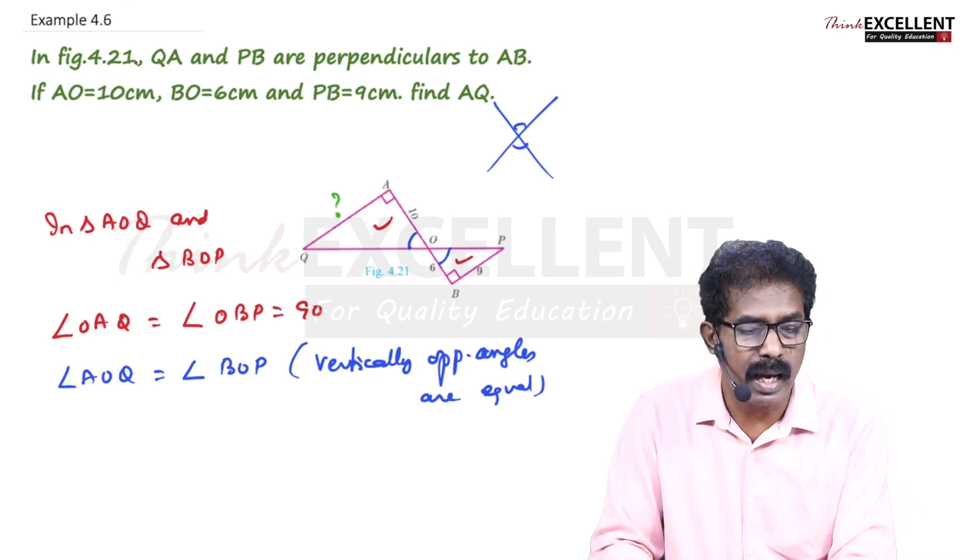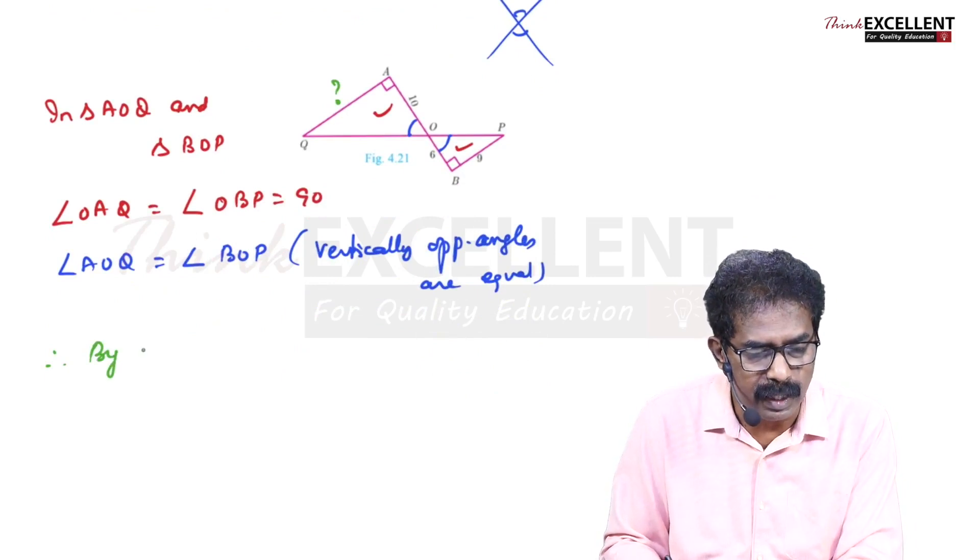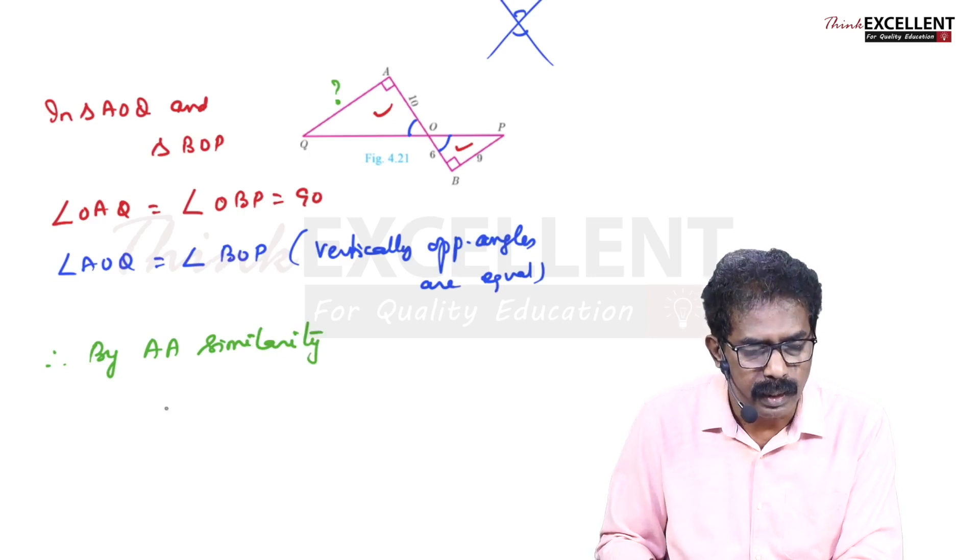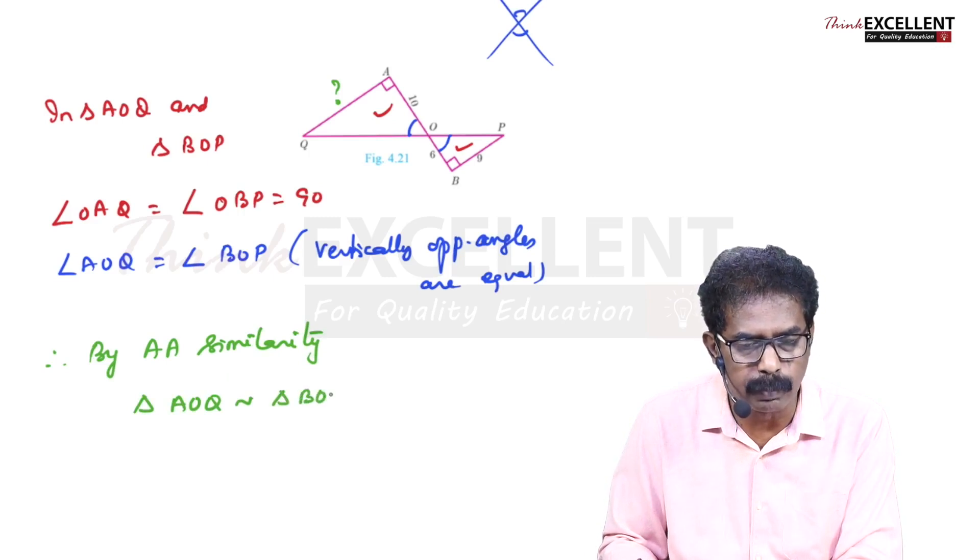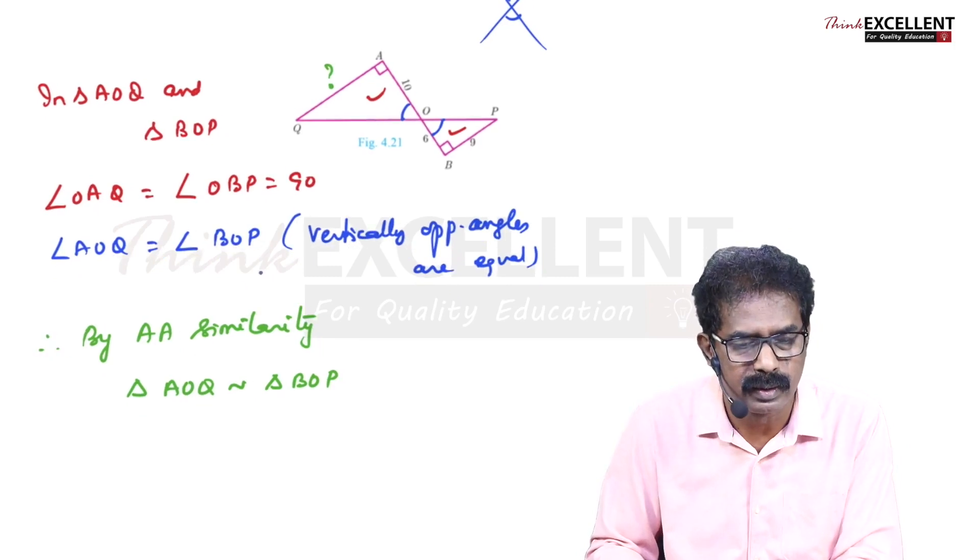Now two angles are equal, so you can say by AA similarity, triangle AOQ is similar to triangle BOP. Now we can say the corresponding sides are proportional. First I'm taking the known one.